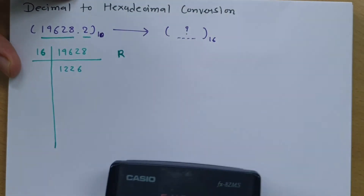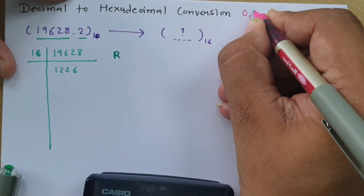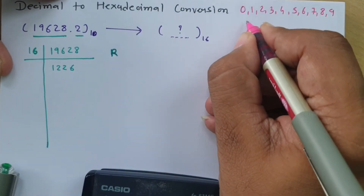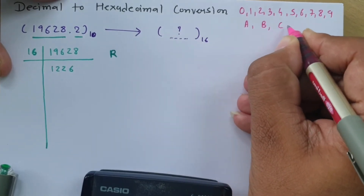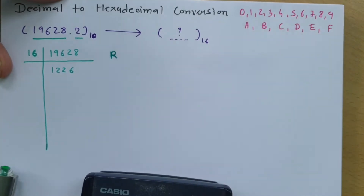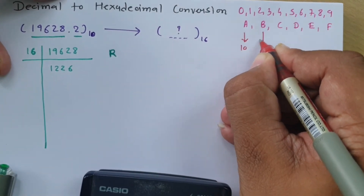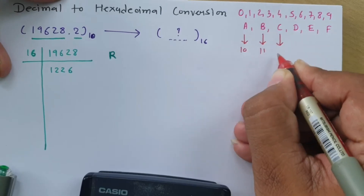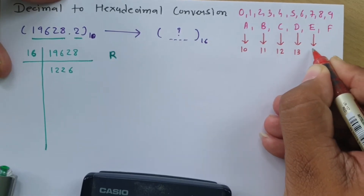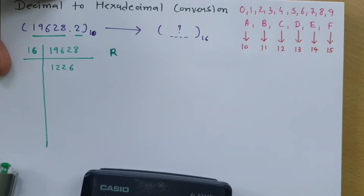In hexadecimal there are 16 digits: 0, 1, 2, 3, 4, 5, 6, 7, 8, 9, then A, B, C, D, E, and F. Their decimal equivalents are: A = 10, B = 11, C = 12, D = 13, E = 14, and F = 15. We need to keep this in mind.